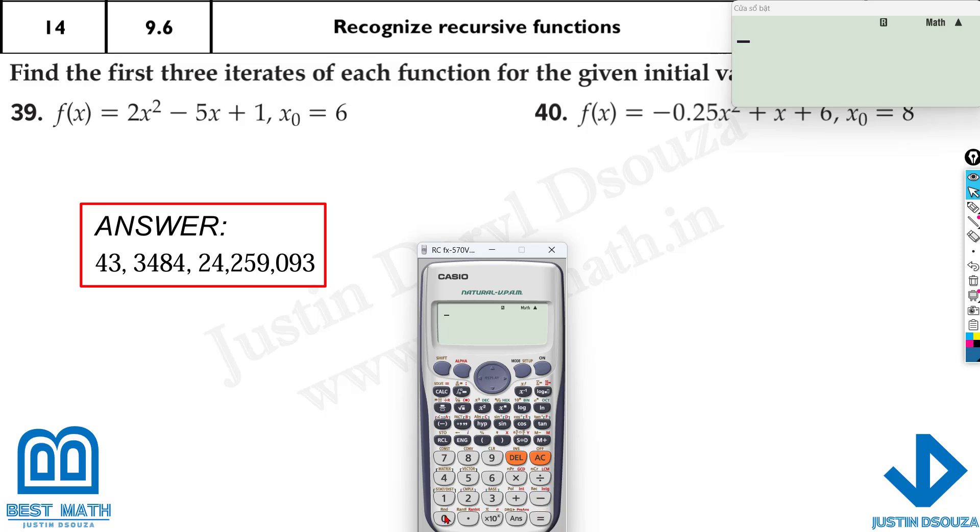What about this one here, let me clear it off, minus 0.25 x squared plus x plus 6. Calculate at the initial value of 8, and it should be minus 2, and then calculate it at minus 2, it is 3, calculate it at 3, it's 6.75.